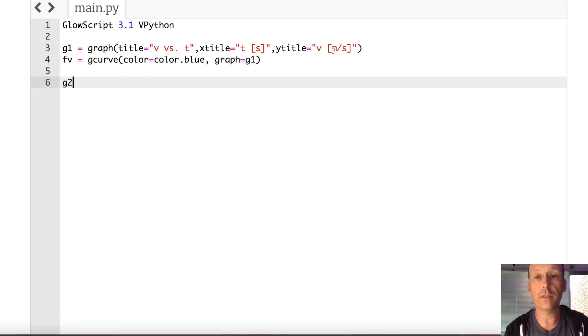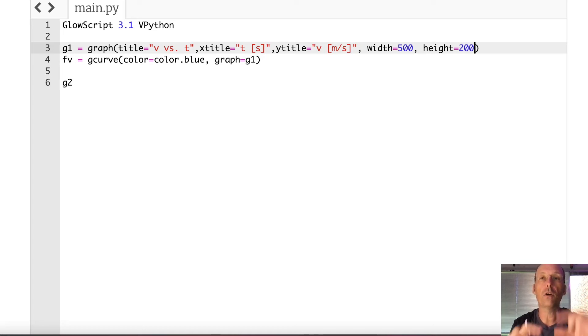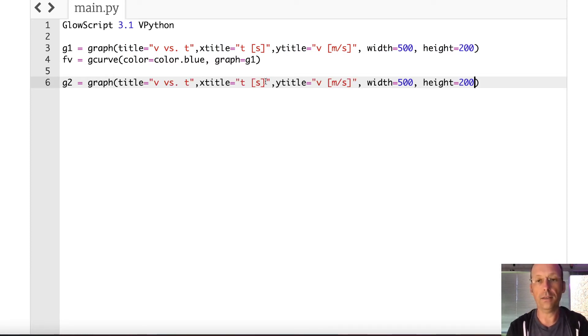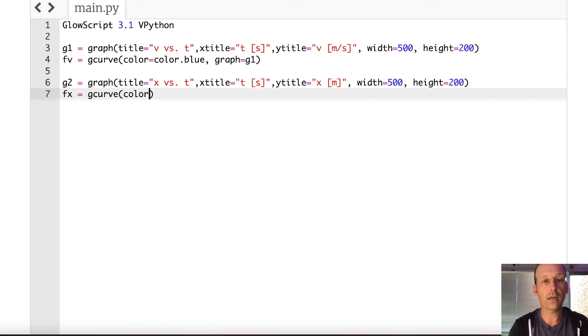You don't have to tell it what color it'll pick, but I like blue. Let's make the other graph. Let's put width equals 500, height equals 200. So I want them skinny, so I can put two on top of each other. Let's copy this whole thing. G2 equals graph, the same width, that y title is going to be x, and it's going to be x versus t. And then I'm going to say fx equals g curve, and let's make this one red, color equals color dot red. Graph equals g2.